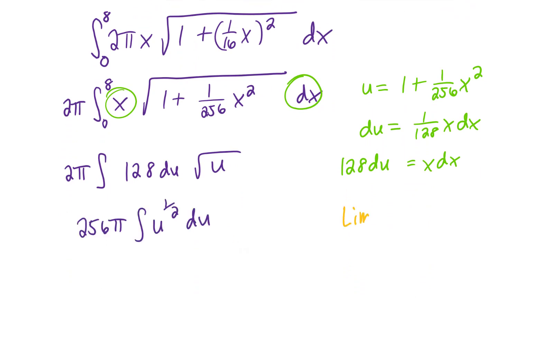Let's talk about our limits of integration. Our lower limit on x was x equals 0. Plugging that into our substitution formula gives us u equals 1. Plugging x equals 8 into the u substitution formula gives us 1 plus 1 fourth, which is 5 fourths. So our limits of integration on u go from 1 to 5 fourths.